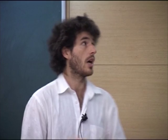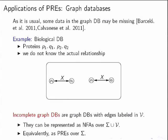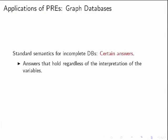This is how you naturally model missing information in a graph database: it's an edge-labeled graph where labels can also be variables. We can now use parameterized regular expressions to query these graphs. For querying, we are interested in certain answers — the answers that hold over all possible interpretations we give to the variables, as is standard for incomplete information in databases.